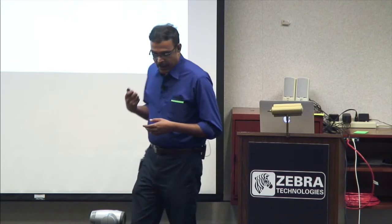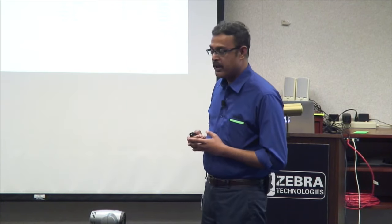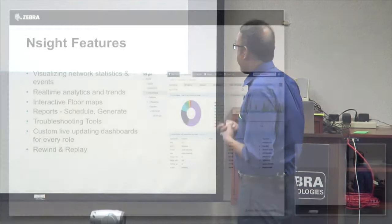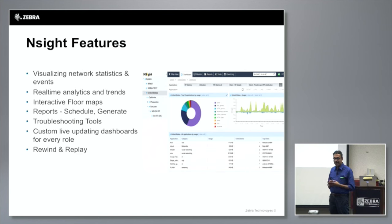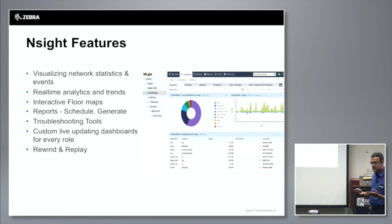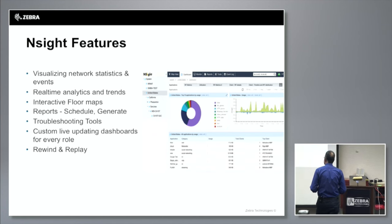Key features of this product: the ability to visualize your network in real-time and get a real-time view of the network. We also collect historical data and store it for longer durations of time, providing real-time trend analytics. It also includes interactive floor map tools — you can visualize your network on a floor map and see where clients are.